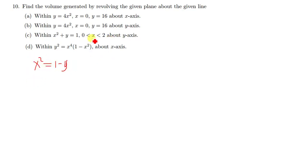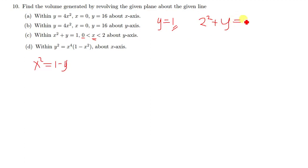We need to find the limits in terms of y. These current limits are in terms of x, so to find the limits in terms of y, we replace x with zero to find y. When x is equal to zero, y equals zero. Then when x equals 2: 2 squared plus y equals 1, so y equals 1 minus 4 equals negative 3. So our lower limit is negative 3 and our upper limit is 1.